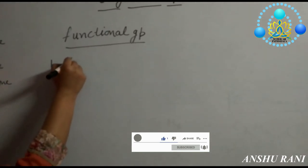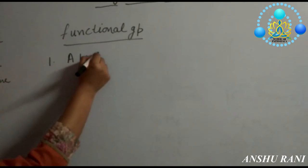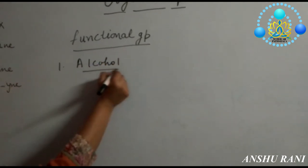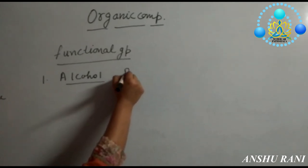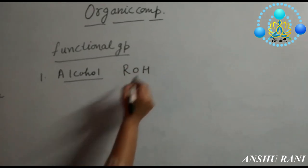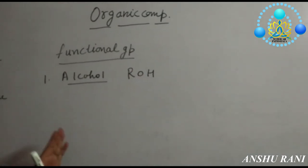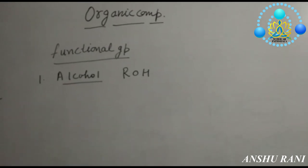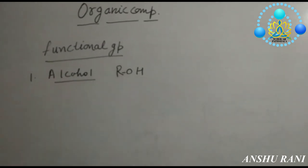First functional group here we will do is alcohol. Alcohol group is written with formula ROH, where R is any alkyl group and OH will be substituted by hydrogen.